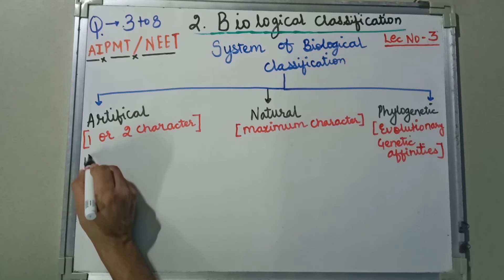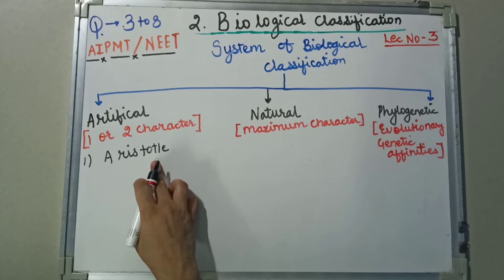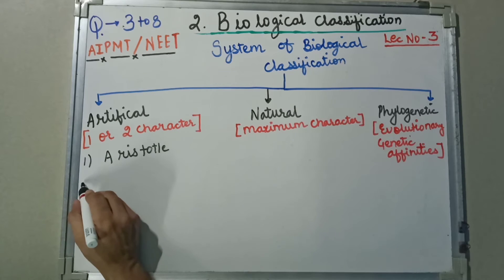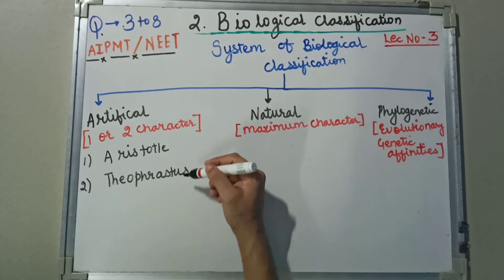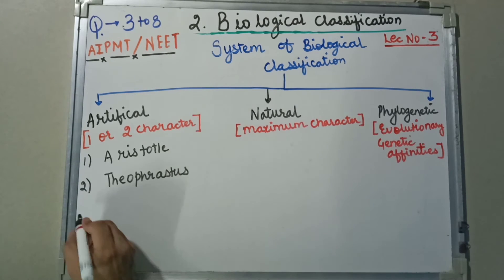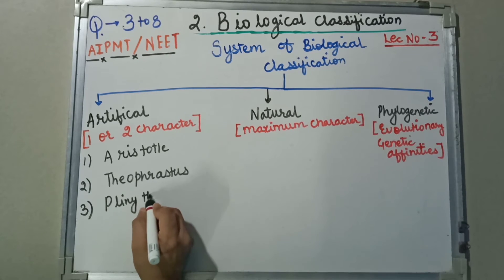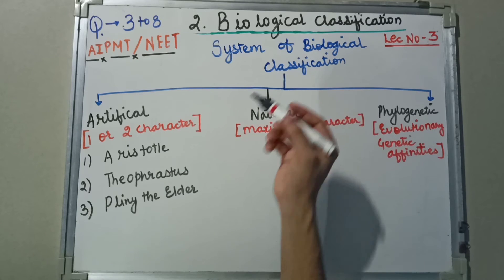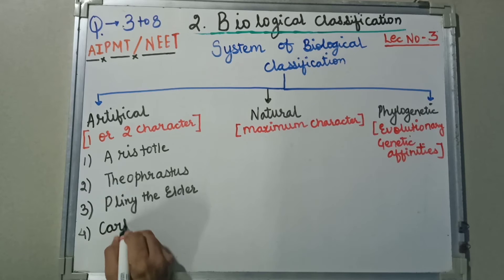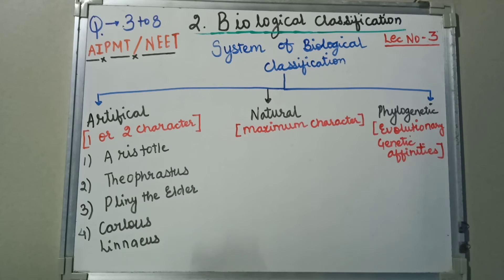The first name is quite obvious — Aristotle. He was the first scientist who gave us artificial classification. The next was his student, Theophrastus. The third scientist is Pliny the Elder. The fourth is Carolus Linnaeus. So in artificial classification we are going to see each of these scientists and the basis of their classification in detail.